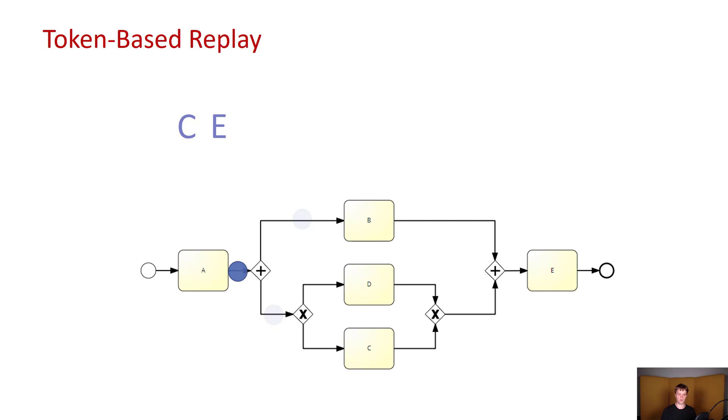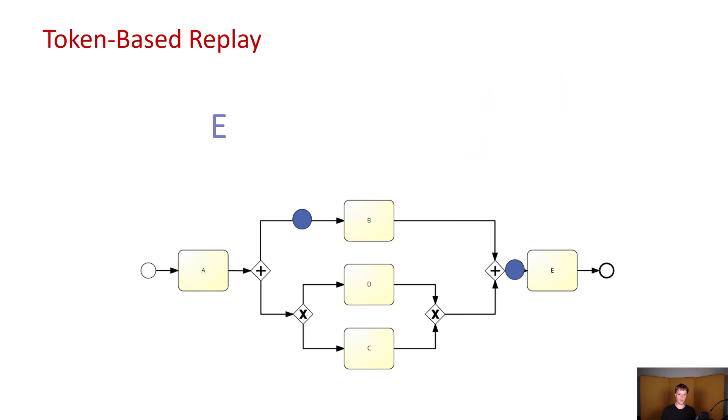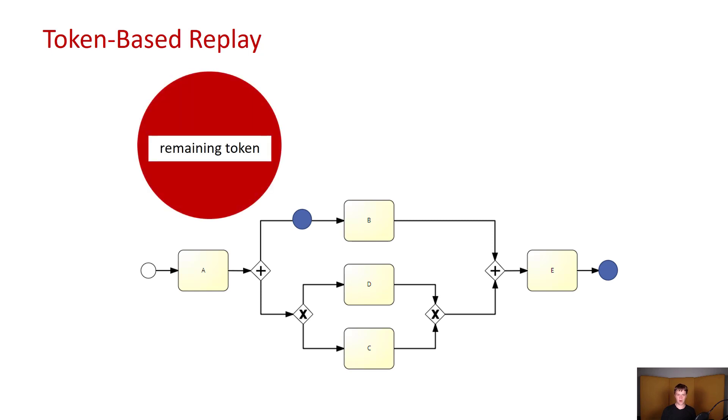So in order to go forward with our token, we first go through the parallel split gateway. Then on the lower branch, we move the token forward once more. We execute C. And now we have to execute E. However, we run into a problem that E requires first going through the parallel gateway where we have one token from the lower branch, but no tokens from the upper branch. So here we actually have a missing token. And in token-based replay, especially if we want to check the conformance between the model and the event log, we now have to take this token, record that it was missing, place it in the model, and then proceed as normal. So we go through the parallel join gateway, we execute E, and we reach the end. However, crucially, now we also have one token left behind. This shouldn't happen, and this is another misalignment between the event log and the model at hand.